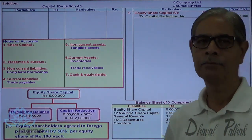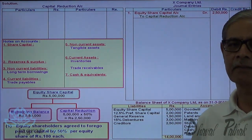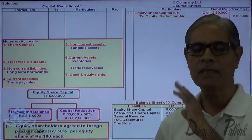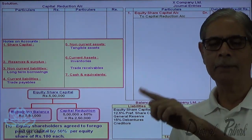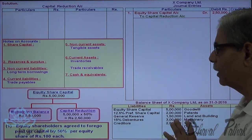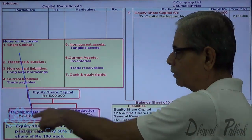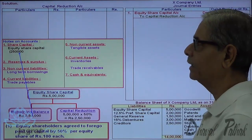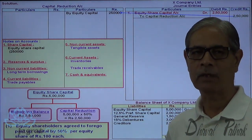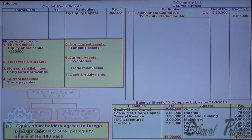If the paid-up value had not declined but the face value changed, the journal entry would be: Equity Share Capital Rs. 100 Account debit Rs. 5 lakhs, to Equity Share Capital Rs. 50 Account credit Rs. 2 lakhs 50,000, and to Capital Reduction Account credit Rs. 2 lakhs 50,000. But here the paid-up value has decreased, so the entry is recorded accordingly. Capital reduction account is credited for the contribution made by equity shareholders. The first point is complete.